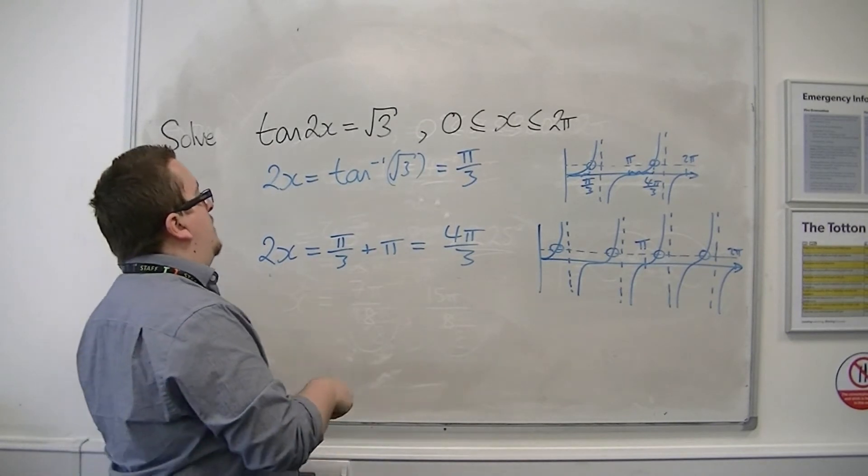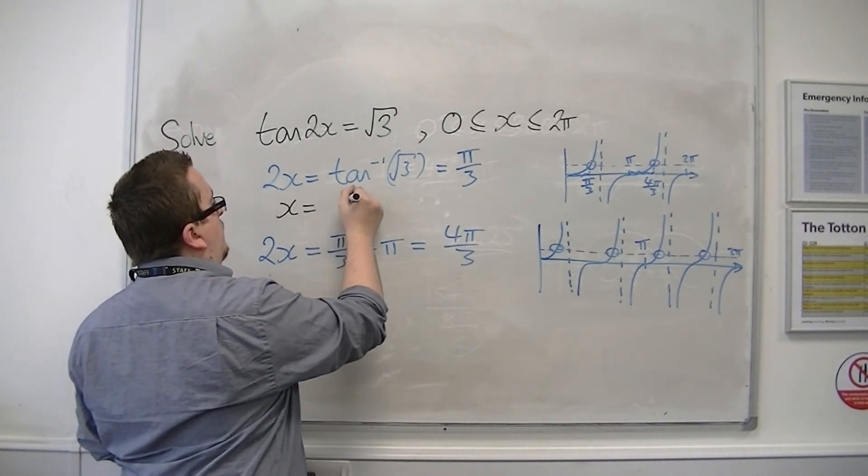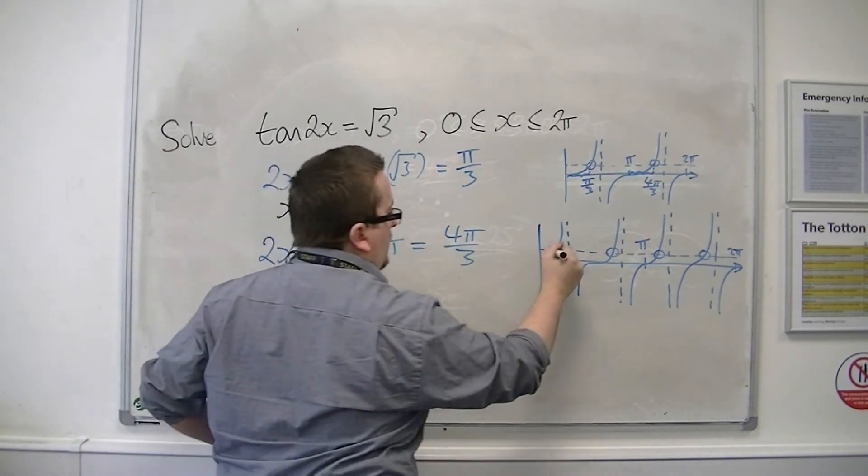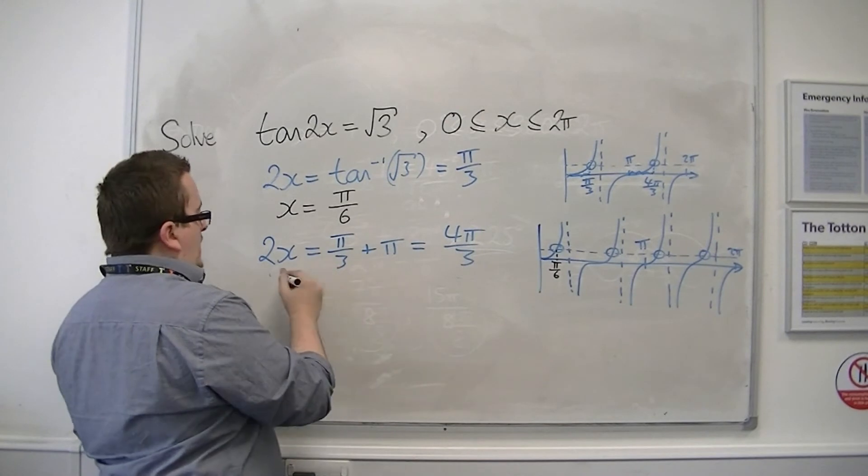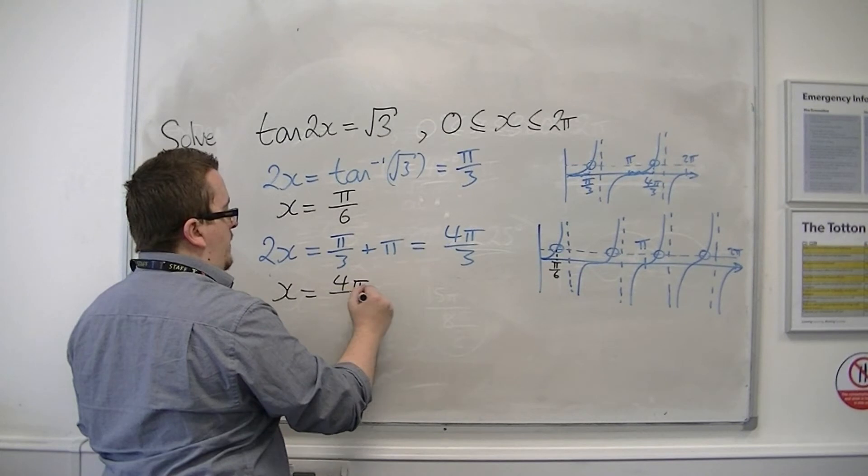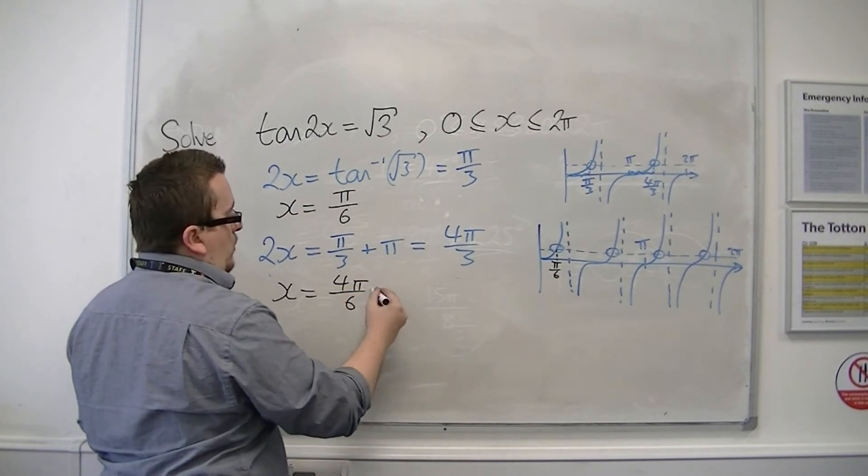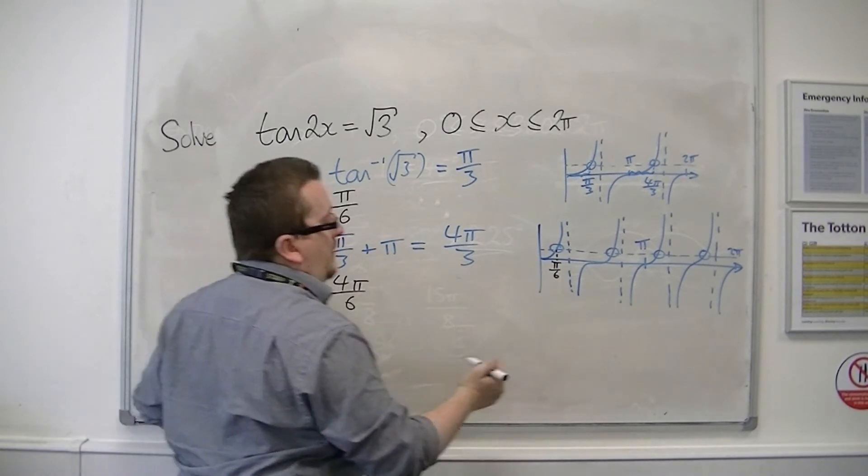So the first two solutions can be found by solving 2x equals pi over 3. So divide through by 2, so I get pi over 6. The second one, divide through by 2. 2x equals 4 pi over 3, so x is equal to 4 pi over 6, which is equal to 2 pi over 3. I'm going to leave it as 4 pi over 6, so it's easier to swap.